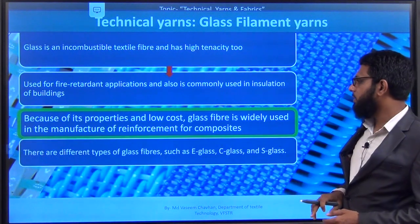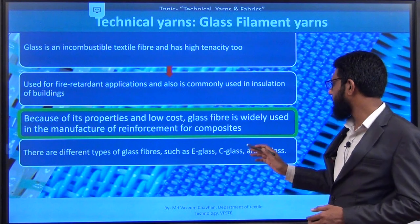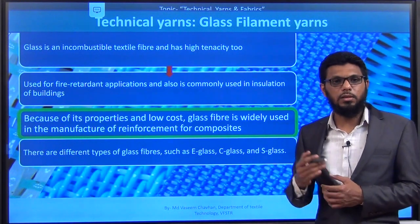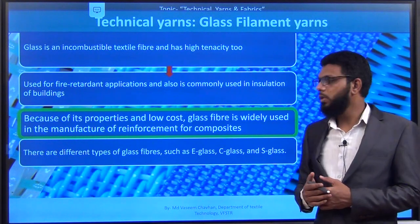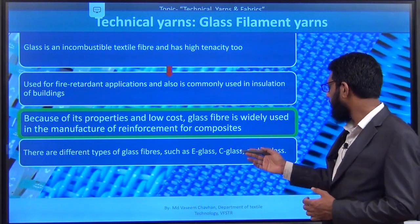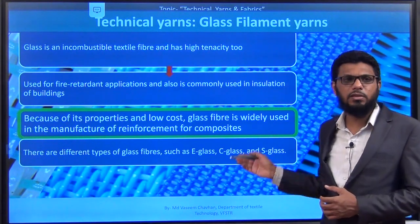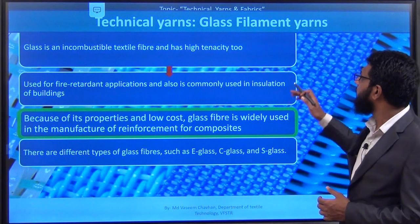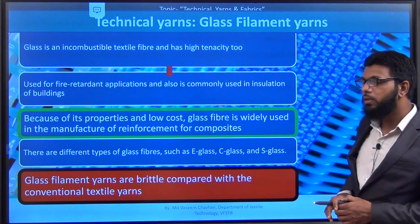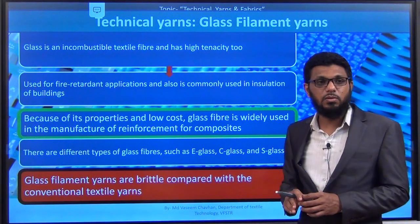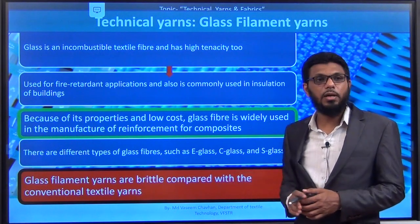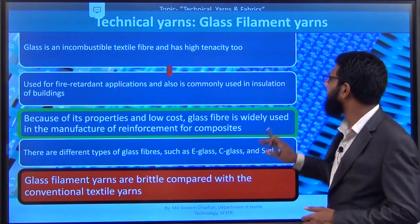There are different types of glass: E glass, C glass, and S glass. In each glass a certain property is given by introducing certain co-polymers. E glass is known for its good insulation properties, C glass for chemical properties, and likewise different grades of glass filament yarns are available. The main disadvantage of this fiber is that it is not flexible — it is very brittle — and the crack can propagate easily. Therefore it has limited applications.